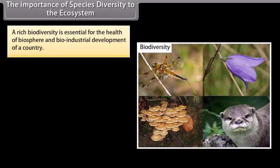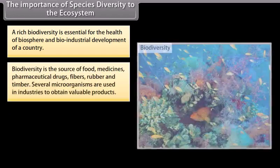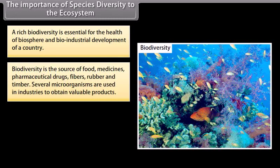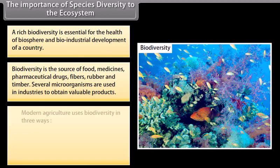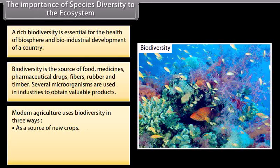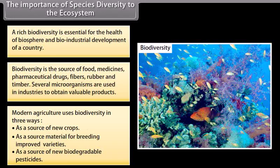The importance of species diversity to the ecosystem. Rich biodiversity is essential for the health of the biosphere and bioindustrial development of a country. Biodiversity is the source of food, medicines, pharmaceutical drugs, fibers, rubber, and timber. Several microorganisms are used in industries to obtain valuable products. Modern agriculture uses biodiversity in three ways: as a source of new crops, as source material for breeding improved varieties, and as a source of new biodegradable pesticides.